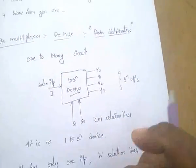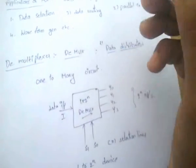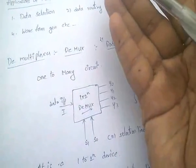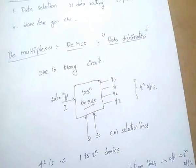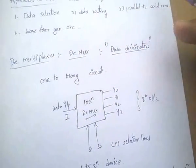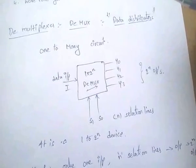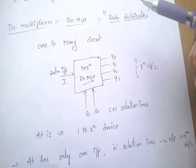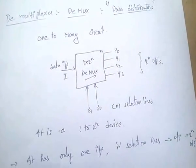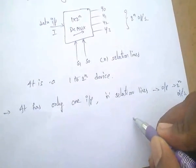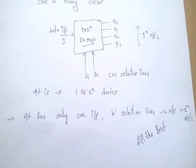To recap: an encoder converts any form to coded form; a decoder converts coded form to decimal or alphanumeric form; a multiplexer is a many-to-one circuit; and a demultiplexer is the reverse — a one-to-many circuit with one input and several output lines. Thank you friends, all the best. In the next video I will discuss remaining topics of digital circuits.